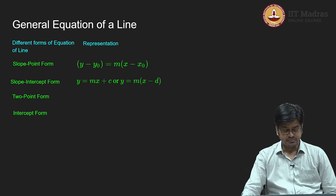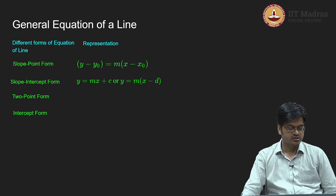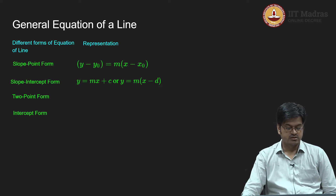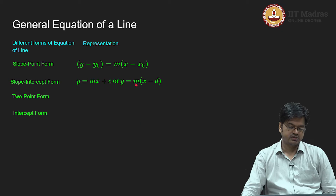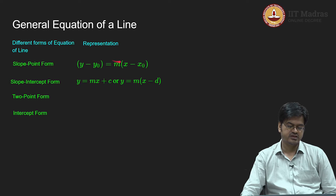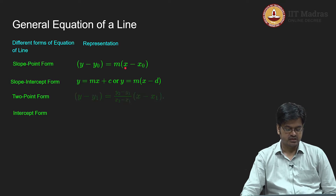Let us come to two-point form. We have also seen during the course that the two-point form is closely related to slope-point form. We know that given any two points on a line we can determine the slope of a line. So in this expression m will be replaced by the ratio of the change in y upon change in x. Therefore the two-point form will be a replica of slope-point form: instead of m you will have the difference between the y-coordinates divided by the difference between the x-coordinates.